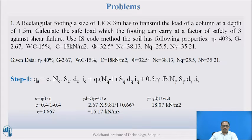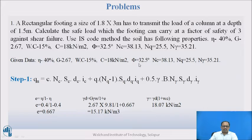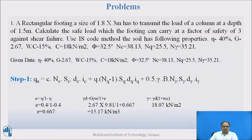In this problem, you need to calculate the safe load using the IS code equation. First, note down the given data: porosity = 40%, specific gravity = 2.67, water content = 15%, cohesion = 18 kN/m², angle of internal friction = 32.5°, and the bearing capacity factors Nc, Nq, and Nγ. The first step is to find the ultimate bearing capacity qu. Before that, we need to calculate the unit weight and dry density of the soil.